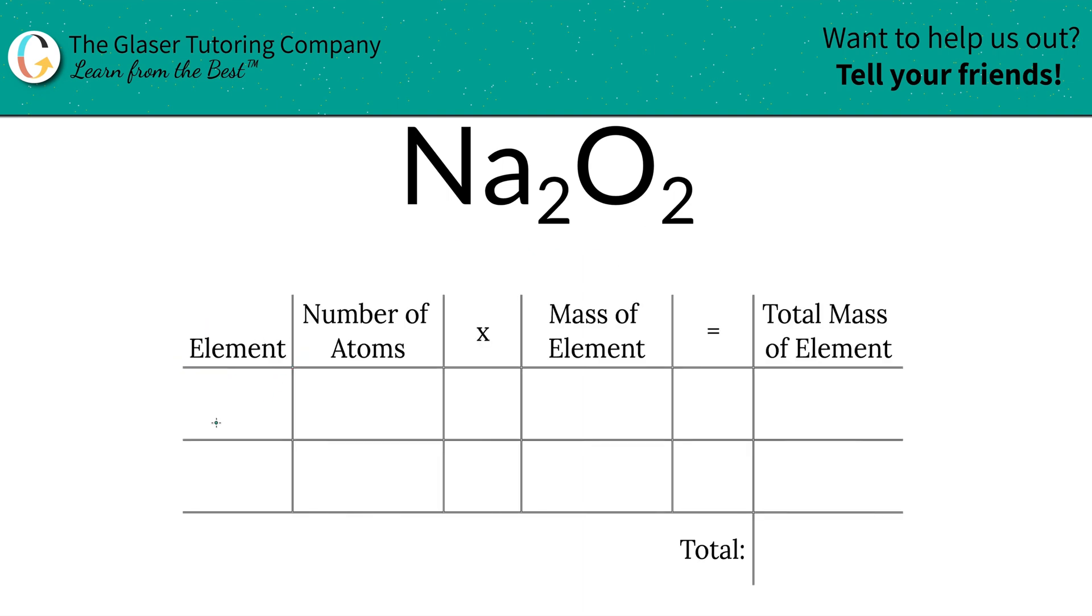The first step is we're going to write the elements down that we see. We've got sodium, oxygen. Then we're going to write down the number of atoms, and that's where the subscripts come into play. We've got two sodiums, two oxygens.